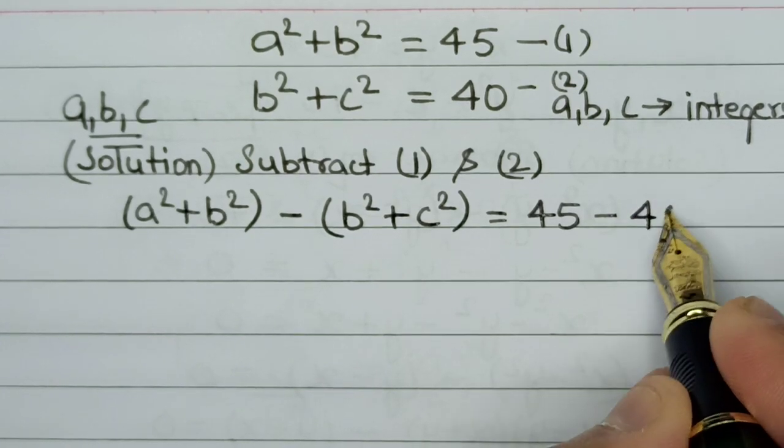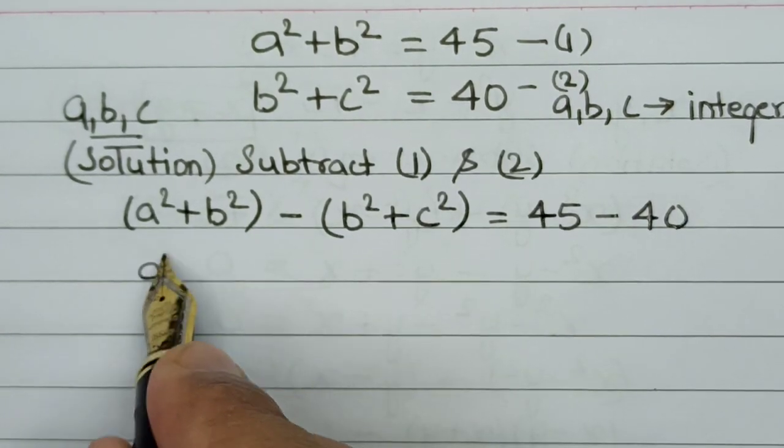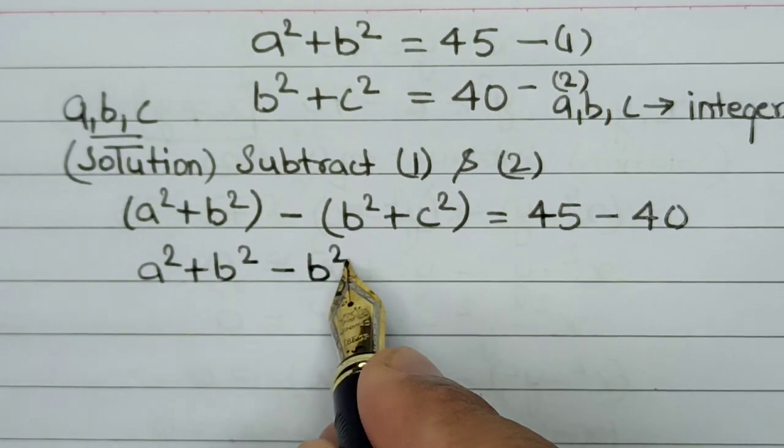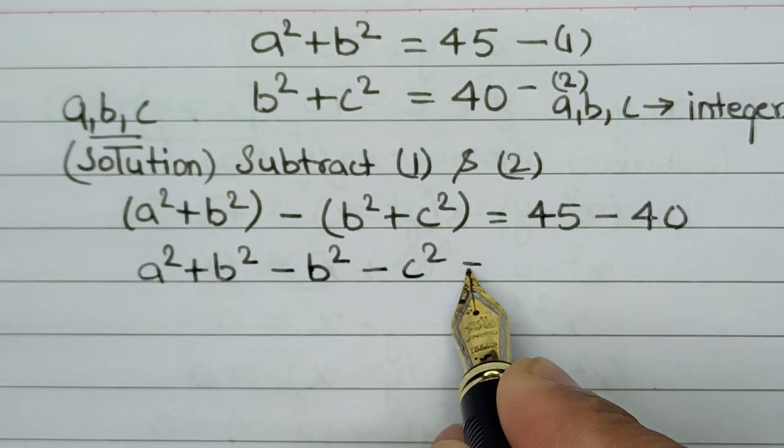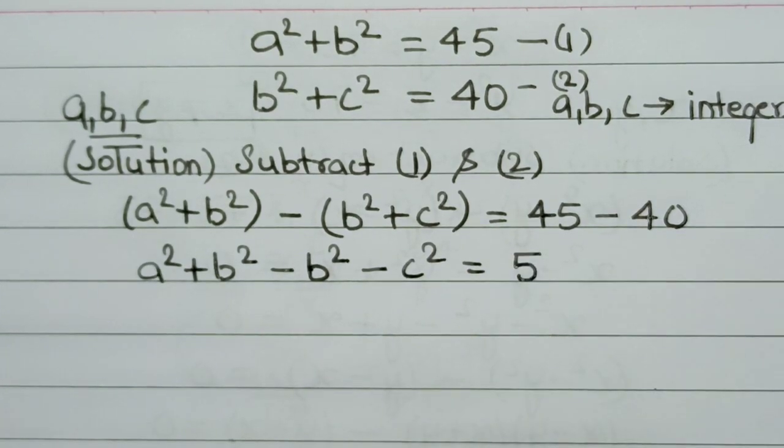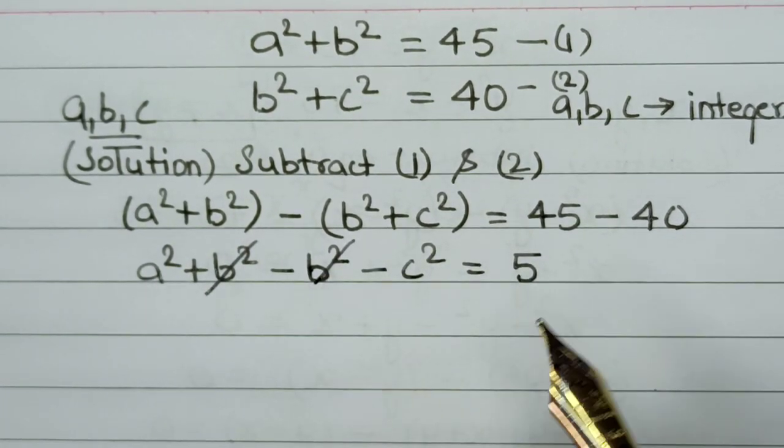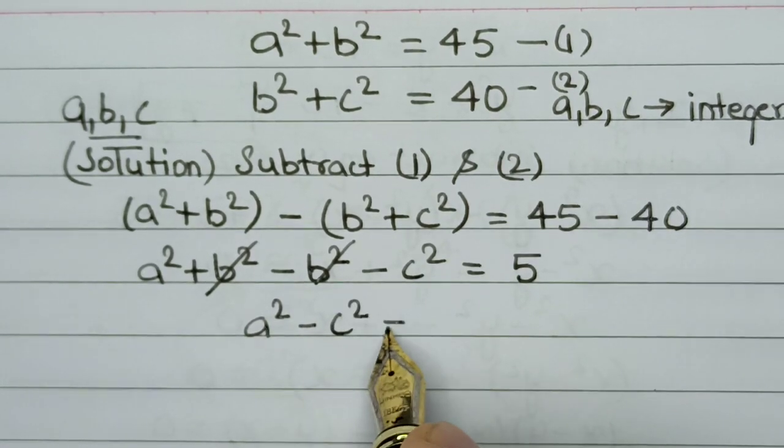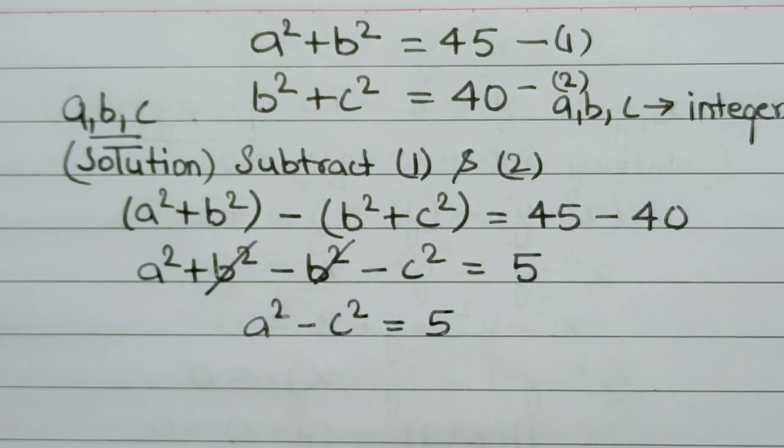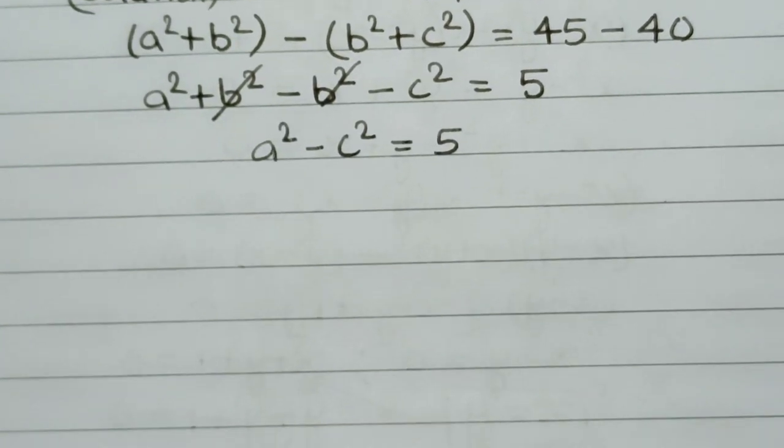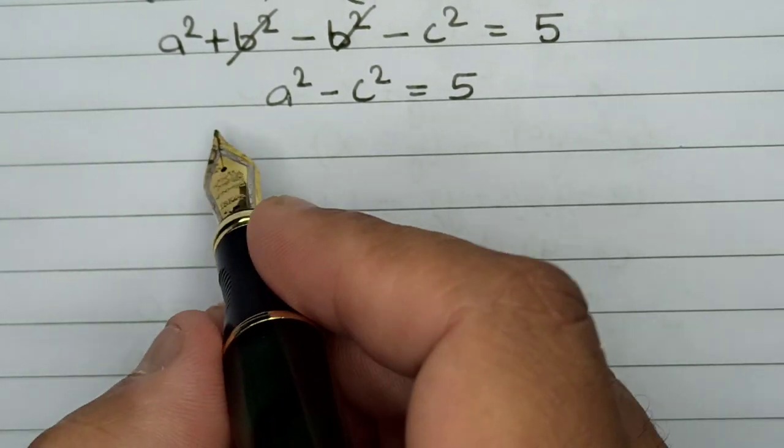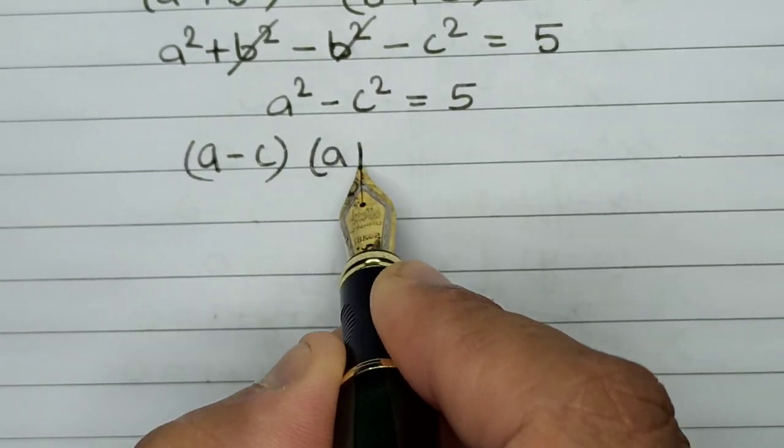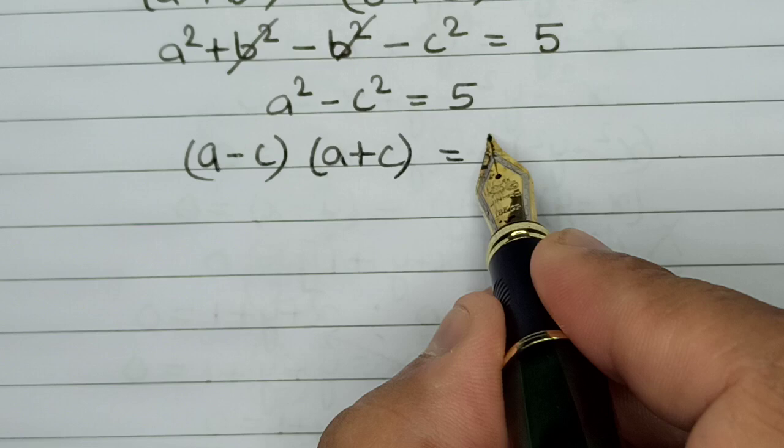In the next step, let's open the bracket. This will be a² + b² - b² - c² = 5. On cancelling b² and -b², we now have a² - c² = 5, which brings us to the next step: (a - c)(a + c) = 5.